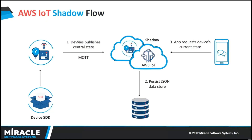AWS IoT provides many SDK options to work with devices. You can use Java, Python, or Node.js — there are different types of SDKs. From the device gateway, it creates a duplicate metadata or data document in AWS IoT in JSON format, and your app can then request that information.